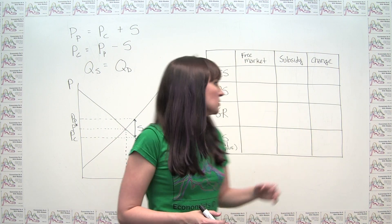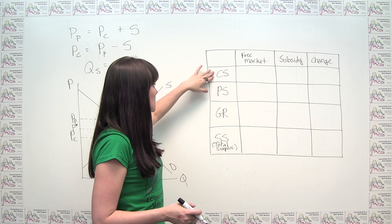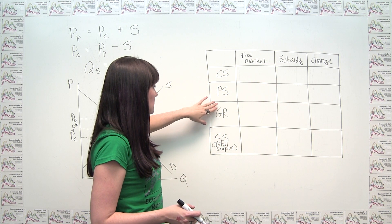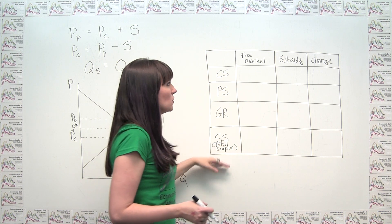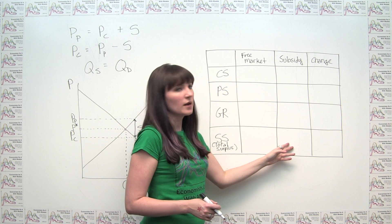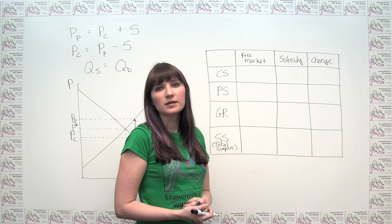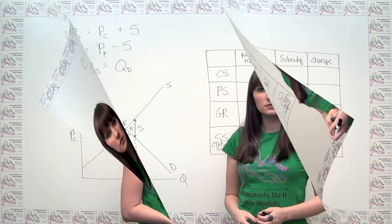So it's worth going through this exercise and understanding how a subsidy affects the amount of value that is created by a market. And to do that, we can think in terms of our typical welfare table, and we can look at consumer surplus, producer surplus, government revenue, and total surplus, both in the free market and under the subsidy, so we can analyze the changes in the value created as a result.